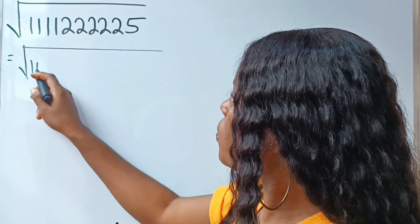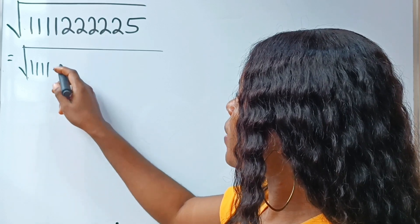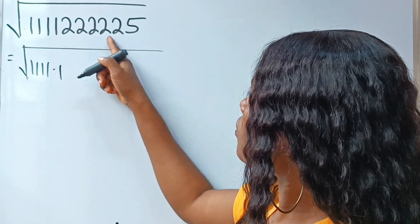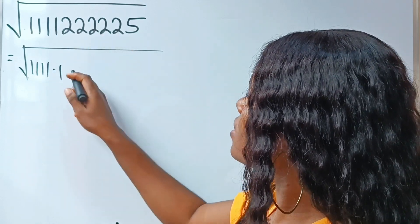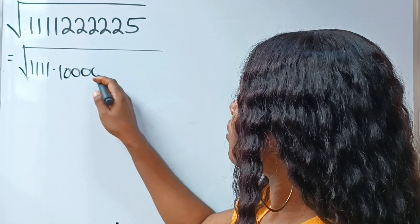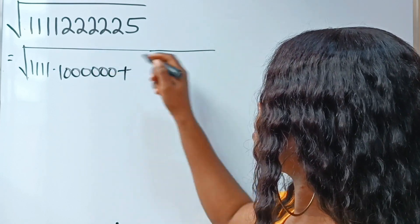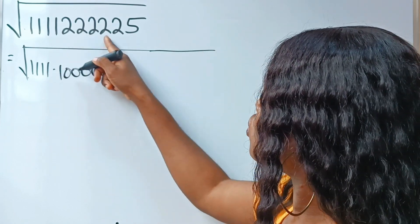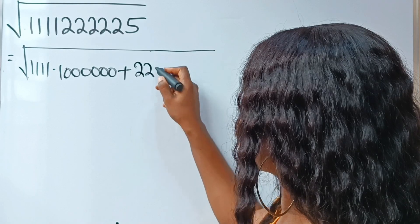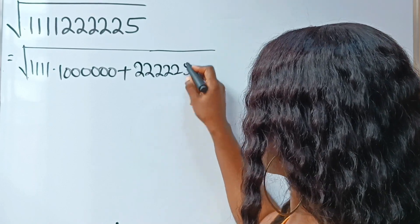Square root of 111,111,111,111 multiplied by 1,111,111,111,111 plus 222,225. Right? 222,225.